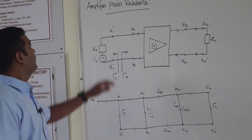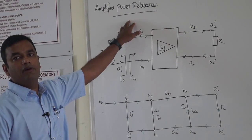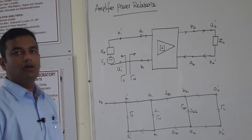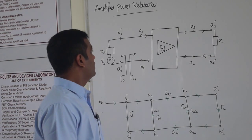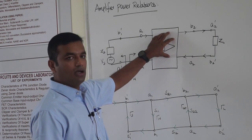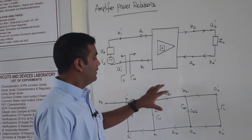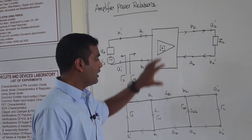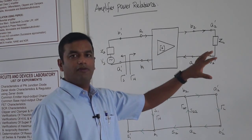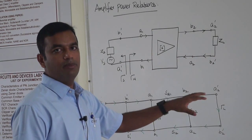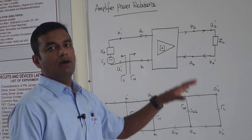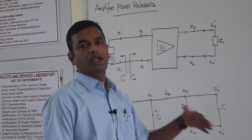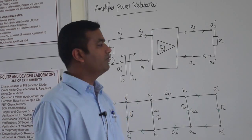In today's session we will be dealing with amplifier power relationships, a very important topic. We will first see how an amplifier performs, then draw the signal flow graph of an RF amplifier, and derive various conditions like incident power, input power, and power available at the load.